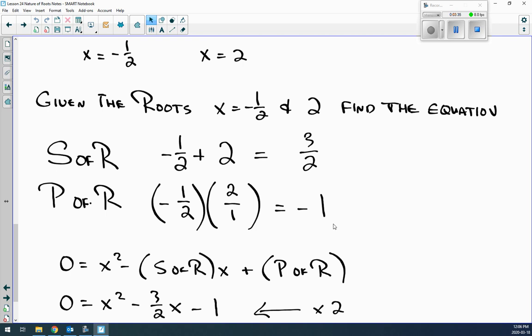Oh, great. So now what you do is you can actually plug them into the formula, which is on your formula sheet. And it's x squared minus the sum of the roots, x plus the product of the roots. So, x squared minus negative 3 over 2x minus 1.